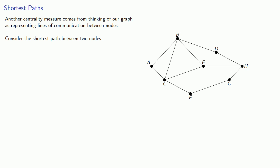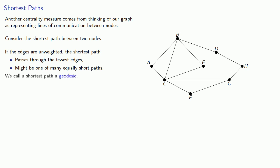Well, what do we mean by that? If the edges are unweighted, the shortest path is the one that passes through the fewest edges. And here's an important idea: it might be one of many equally short paths. We call a shortest path a geodesic, and remember, there might be several paths that are equally short.